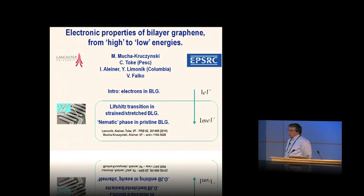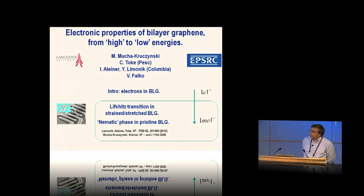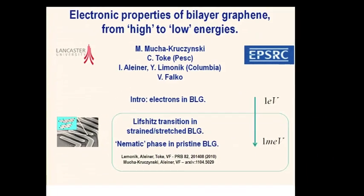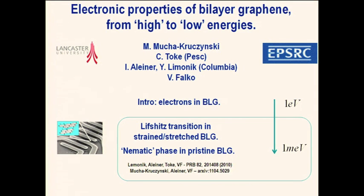What I would like to do in this talk is to describe quite funny physics that is possible in bilayer graphene at pretty low energy scale of several millielectron volts in terms of the electron excitation energies or Fermi level in bilayer graphene counted from the Dirac point. I'll have a road built from the high energy description of the electrons using the tight binding model down to two events which may happen, or I think they do happen, in bilayers.